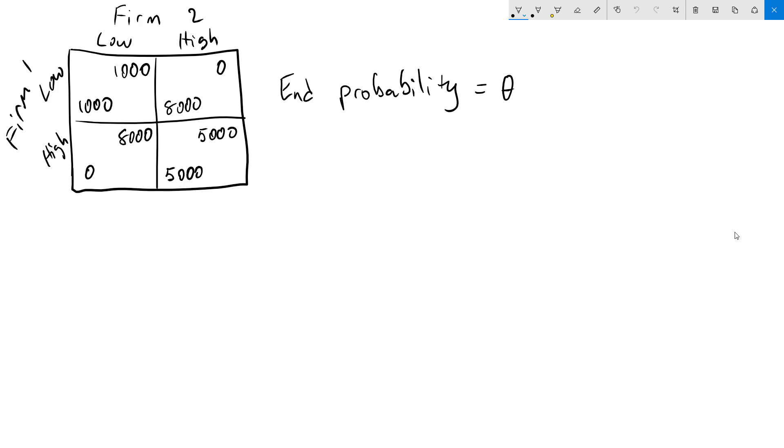In the one-shot version of this, the Nash equilibrium is low and low, where each get a profit of $1,000. They would much rather get to the collusive outcome of high and high for an outcome of $5,000.